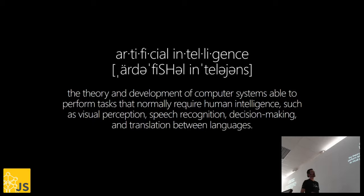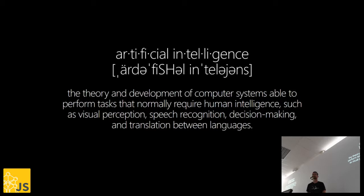What is AI? A definition here is basically any task that would normally require some human intelligence to be executed by computers. Think about visual perceptions, recognizing images, doing speech recognition, making decisions, translating between languages, and so on. The definition of artificial intelligence can vary somewhat, but the concept is pretty much clear, and it can take many forms.